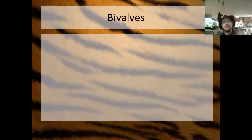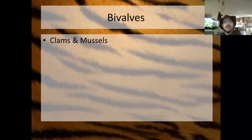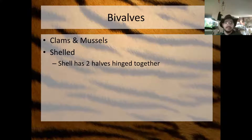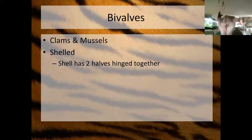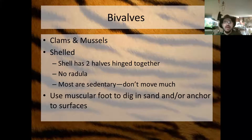Next up is Class Bivalvia — Phylum Mollusca, Class Bivalvia. These are the clams and the mussels. They have a shell in two parts hinged together, which is why we call them bivalves — bi meaning two. They have no radula, and most are sedentary, meaning they don't really move around. They use their muscular foot to dig into the sand or anchor to surfaces and then just stay there.